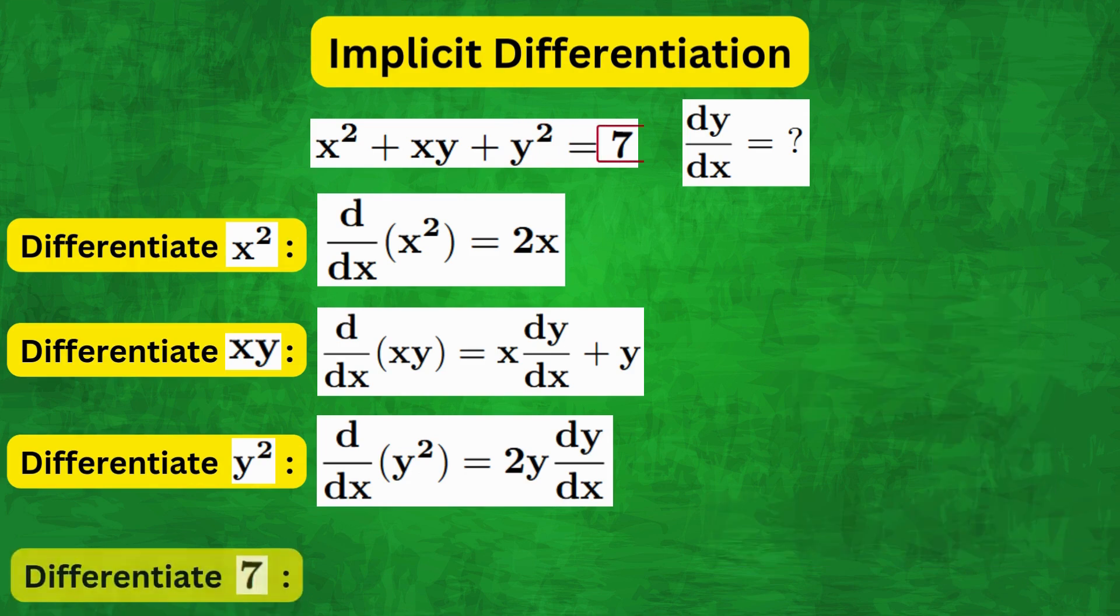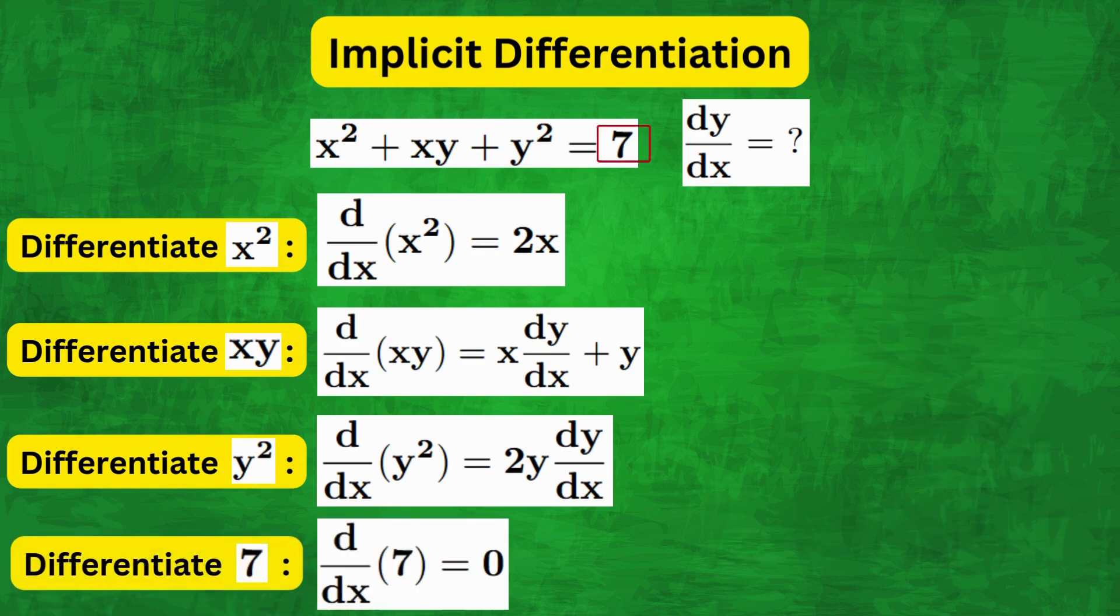Then for the constant 7, the differential, of course, is 0, as it's a constant.